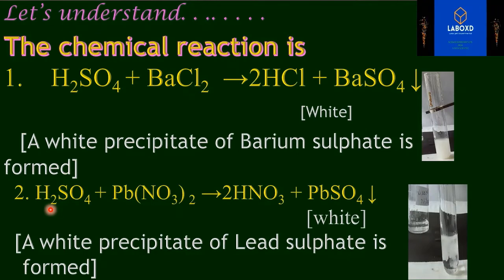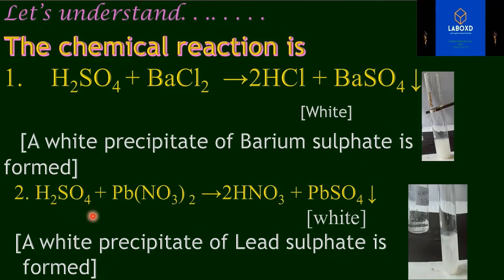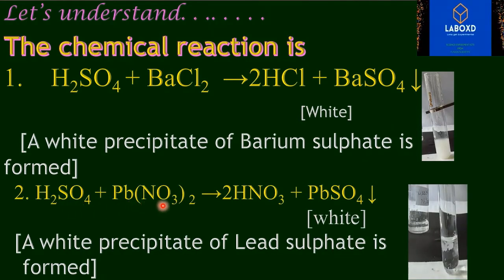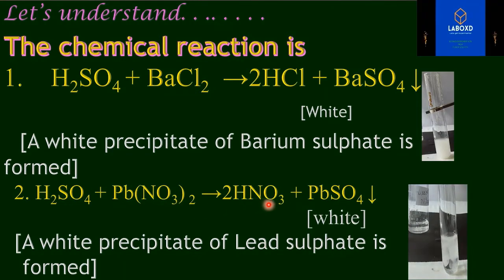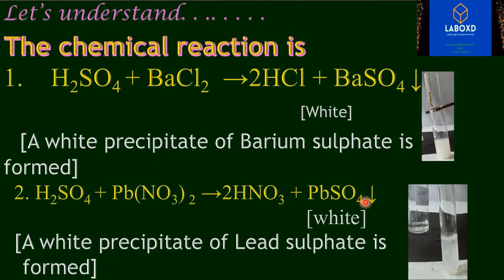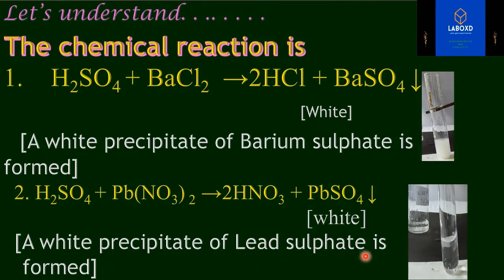In the second test, the reaction is as follows: H₂SO₄ (sulfuric acid) reacts with Pb(NO₃)₂ (lead nitrate) to form HNO₃ (nitric acid) and PbSO₄ (lead sulfate). A white precipitate of lead sulfate is formed.